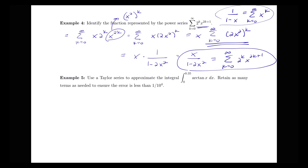Now for another type of application problem: we're going to use a Taylor series to approximate the integral from 0 to 0.35 of arctan(x) dx. We want to keep as many terms as needed to ensure our error in approximation will be less than 1 over 10 to the 4th. We recall that we've seen the Taylor series for arctan(x) before, and you wouldn't be expected to memorize this — we can look it up from a table of common known Taylor series.